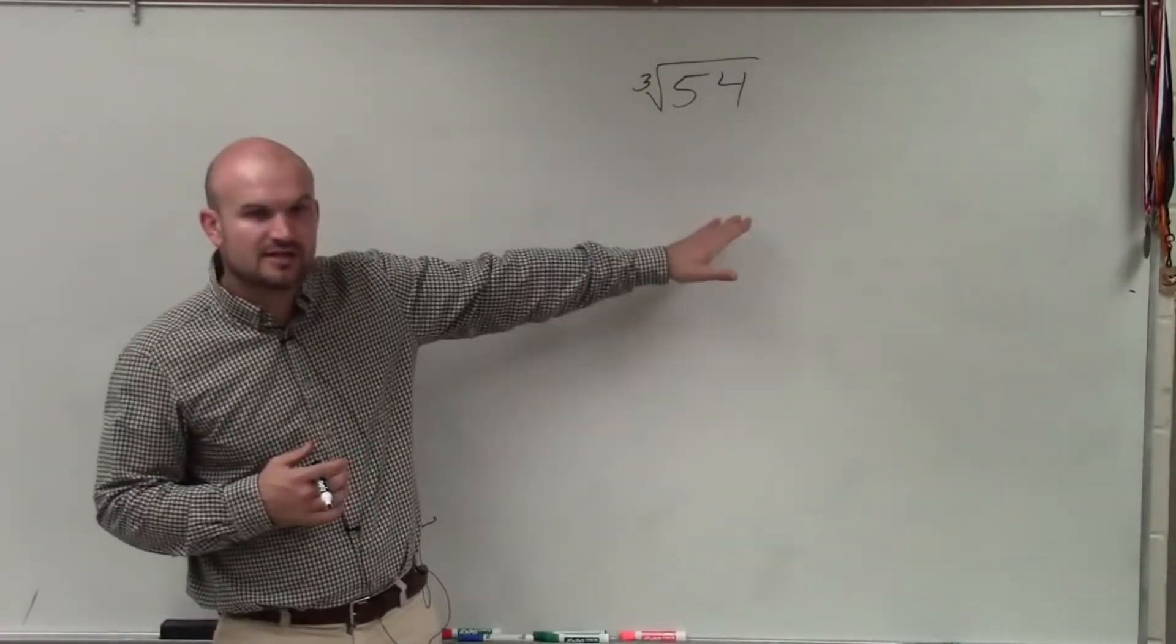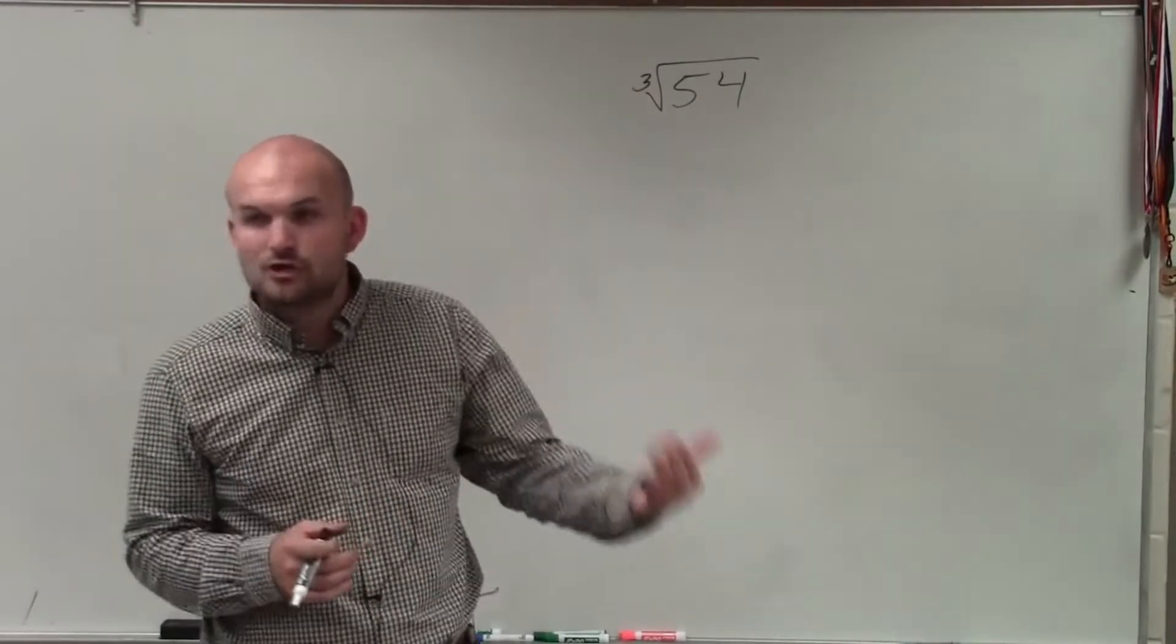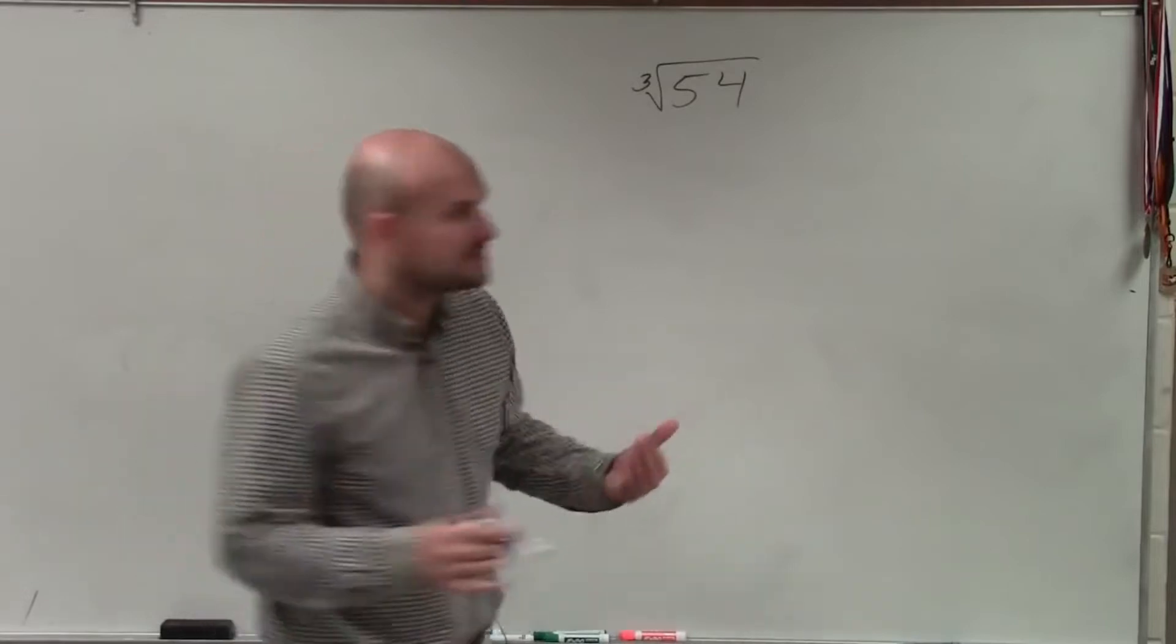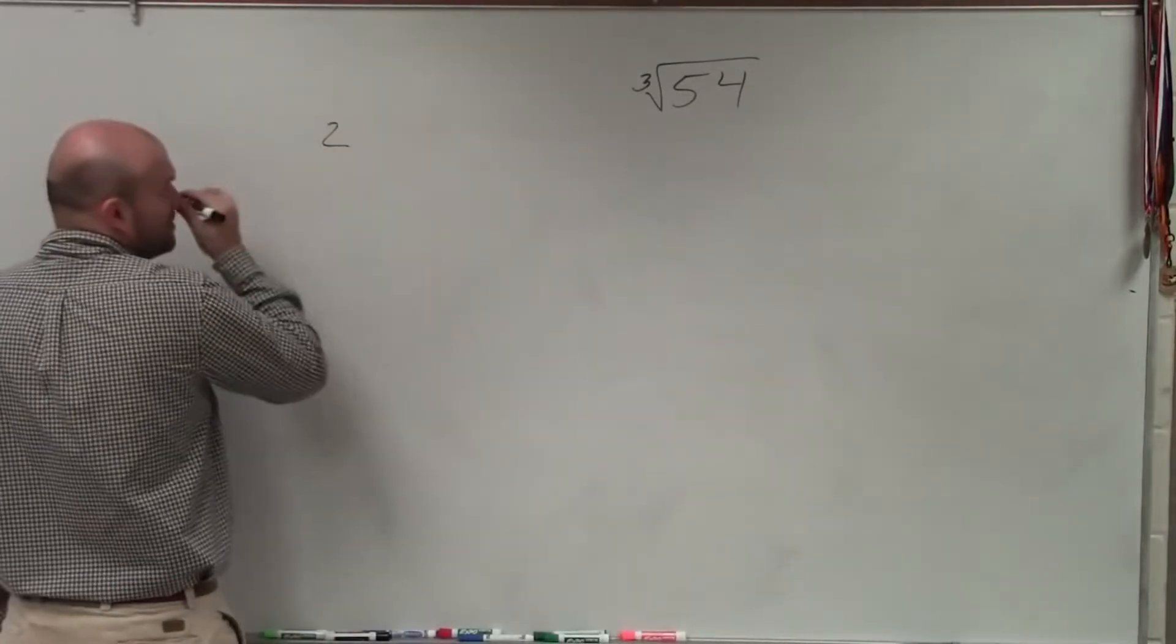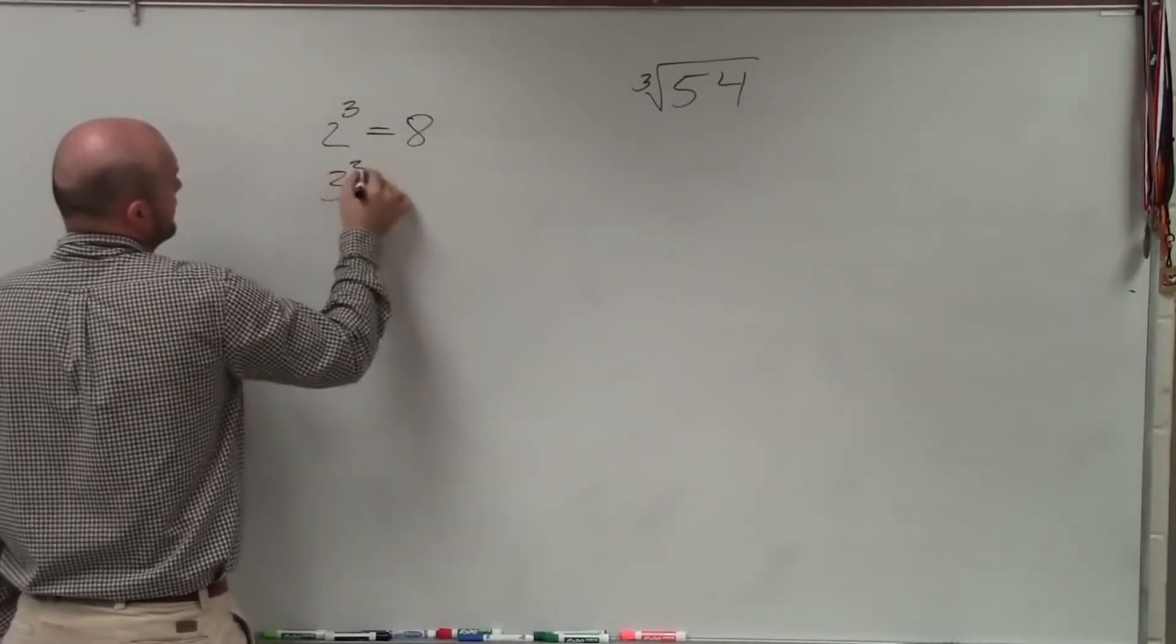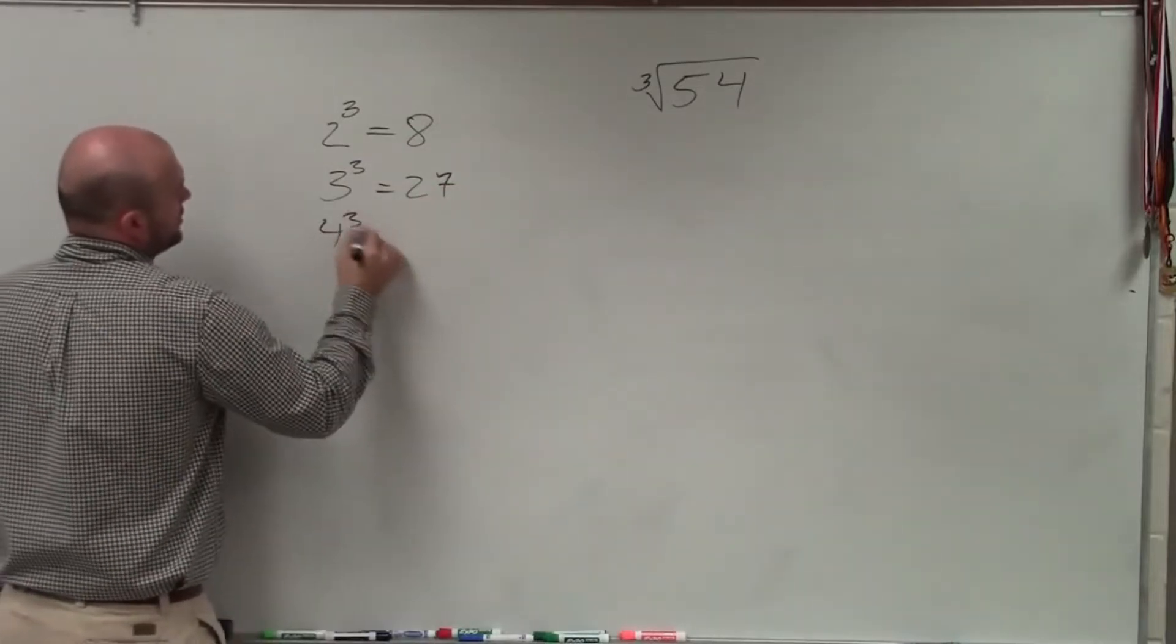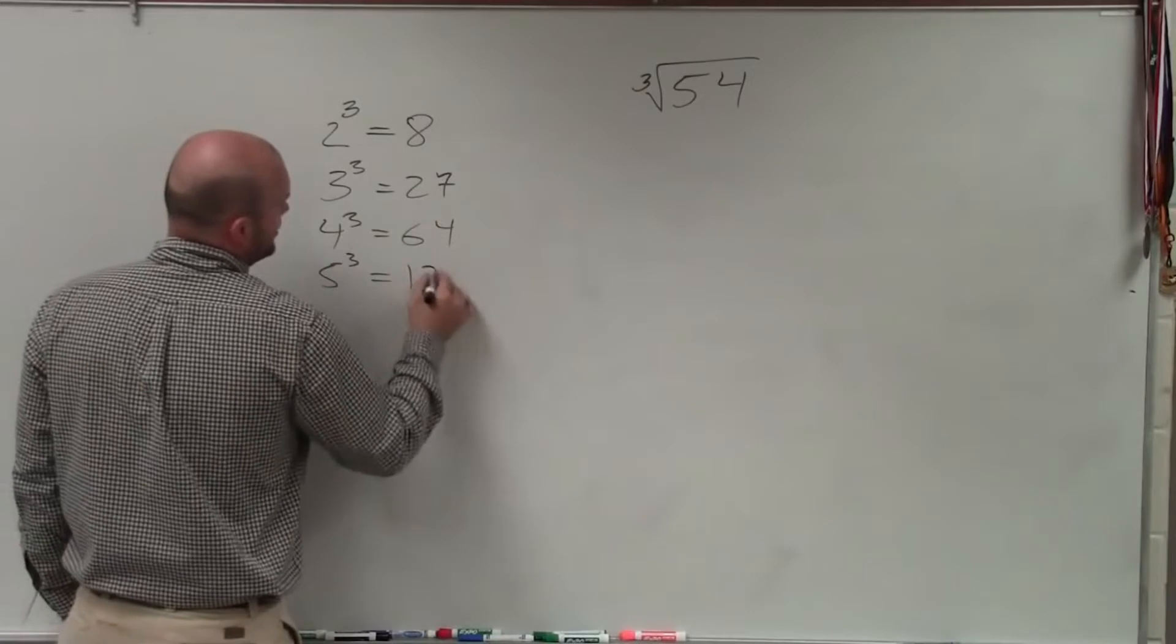However, I always prefer, just like with square roots, to find square numbers that you can divide into. So when we're talking about cube roots, you want to find cube numbers. And what's nice about simplifying cube numbers is there's not that many cube numbers that you're going to be working with. 2 cubed is 8, 3 cubed is 27, 4 cubed is 64, 5 cubed is 125.